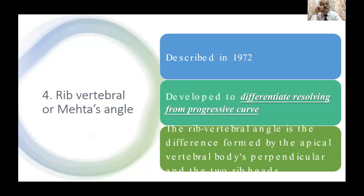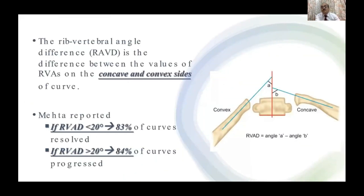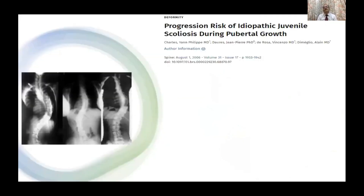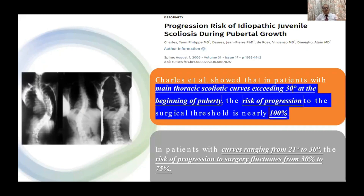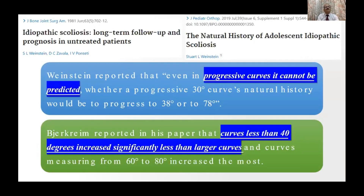The rib vertebral angle, or Mehta's angle, given in 1972 by Dr. Mehta, is the difference between the concave and convex side rib vertebral angles used to differentiate resolving versus progressive curves. If the rib vertebral angle difference is less than 20 degrees, 83% of curves will resolve. If more than 20 degrees, 84% of curves will progress. The initial Cobb angle is also an important factor — literature suggests that a main thoracic scoliotic curve exceeding 30 degrees at the beginning of puberty has 100% chance of progression, though Weinstein et al. have contradicted this.